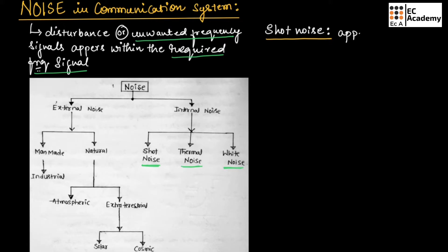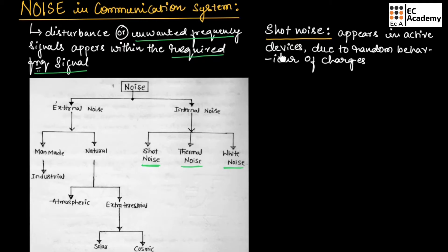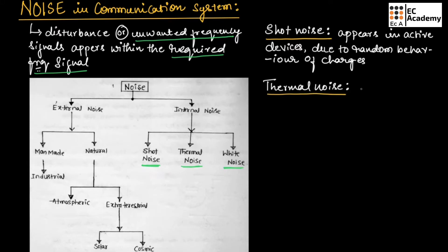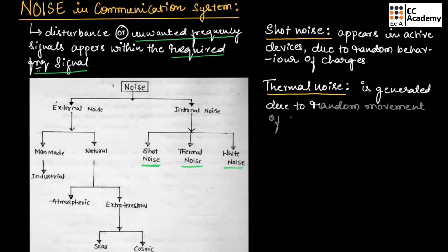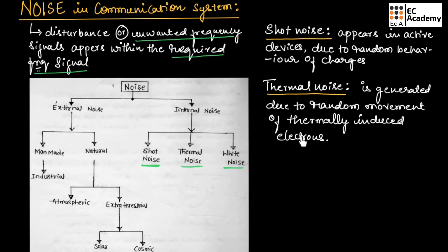Shot noise appears in active devices due to the random behavior of charges — which may be electrons or holes inside a semiconductor. Thermal noise is generated due to the random movement of thermally induced electrons.